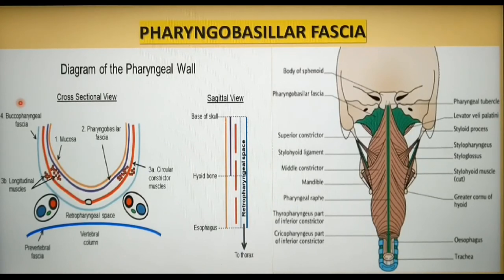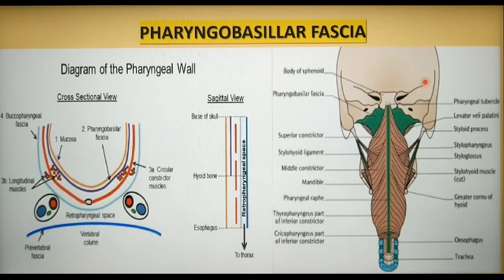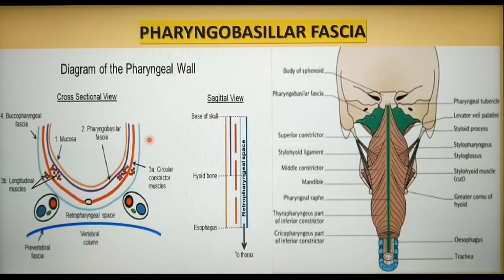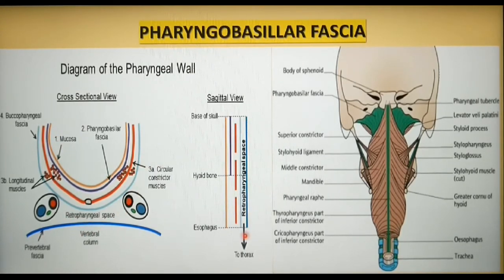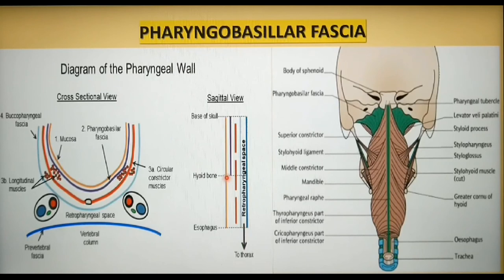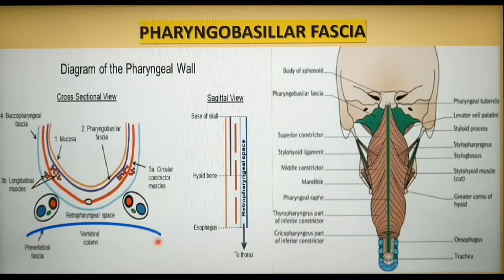The pharyngeal fascia is the thickened part of the deep cervical fascia between the upper border of the superior constrictor muscle and the base of the skull. It lies deep to the pharyngeal muscles. This figure depicts the relationship between the prevertebral fascia, the buccopharyngeal fascia, and the pharyngobasilar fascia. The dark blue is the prevertebral fascia, the light blue is the buccopharyngeal fascia, which eventually meets somewhere between C6 and T4. Between the pharyngobasilar and buccopharyngeal fascia lie the constrictor muscles of the pharynx.